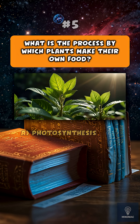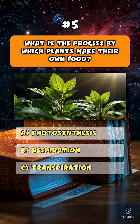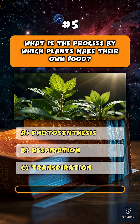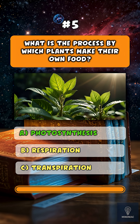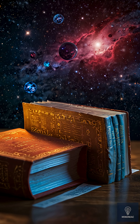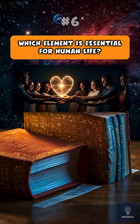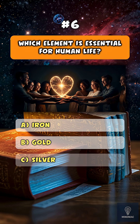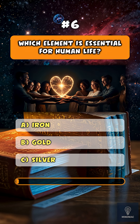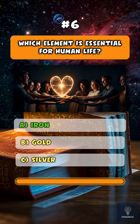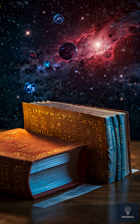What is the process by which plants make their own food? A, photosynthesis. Which element is essential for human life? A, iron.